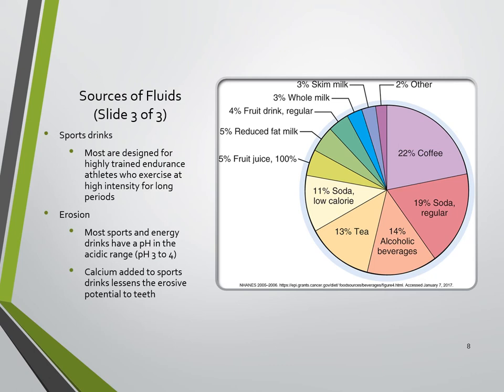Most sports and energy drinks have a pH in the acidic range, around 3 to 4. Calcium has been recently added to some sports drinks to lessen their erosive potential on teeth, but it doesn't completely negate those effects. Research suggests enamel erosion from various beverages occurs in this order from greatest to least: energy drinks, sports drinks, regular soda, and diet soda. Diet soda still causes erosion because of its acidic pH.